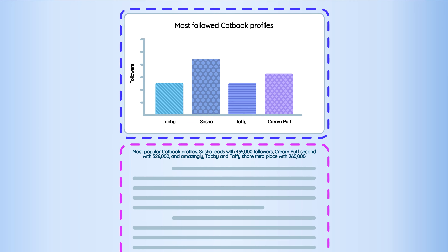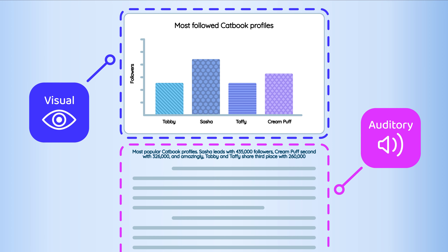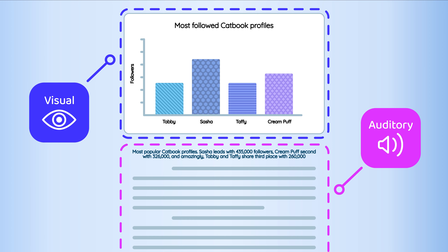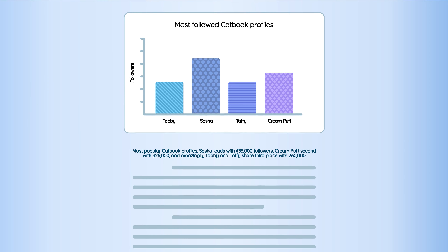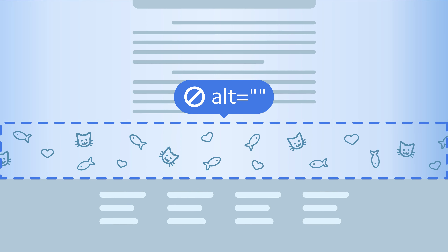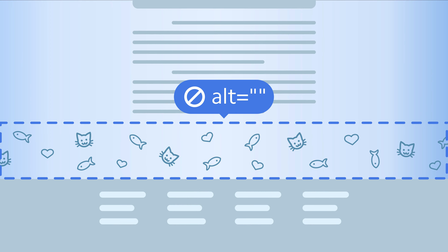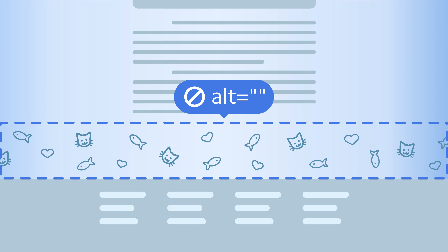The key here is this: you must provide the same information no matter how someone accesses your website. What if it's none of those things? What if it's simply eye candy? No description needed. Include the alt attribute but leave it blank like this. That way the screen reader will skip over it.